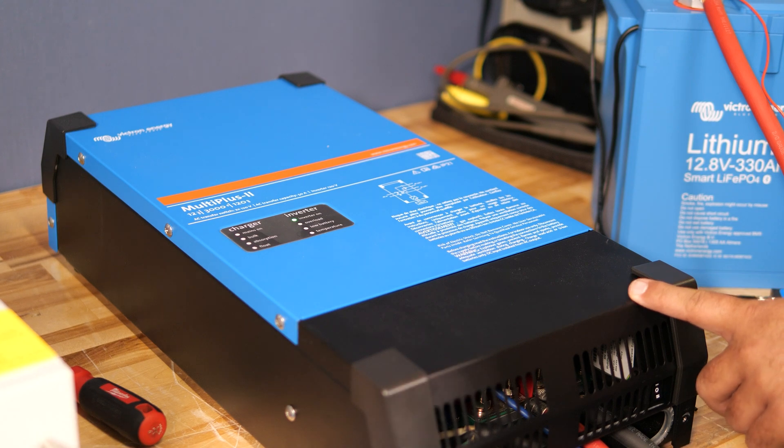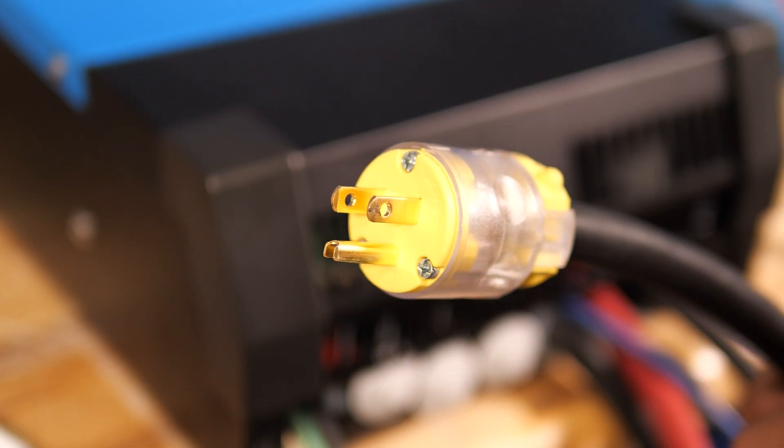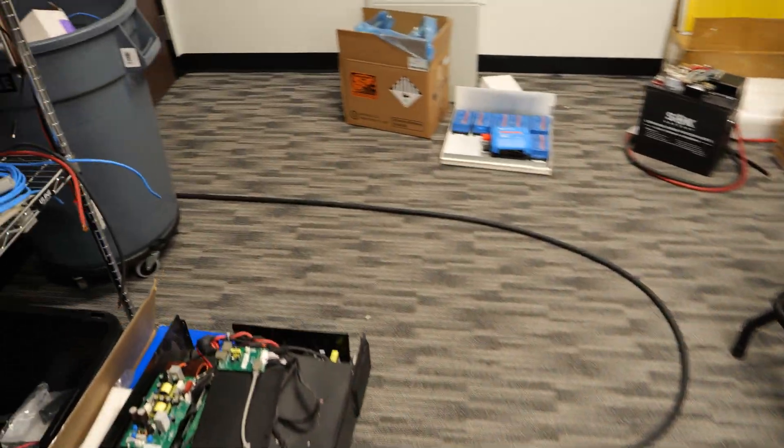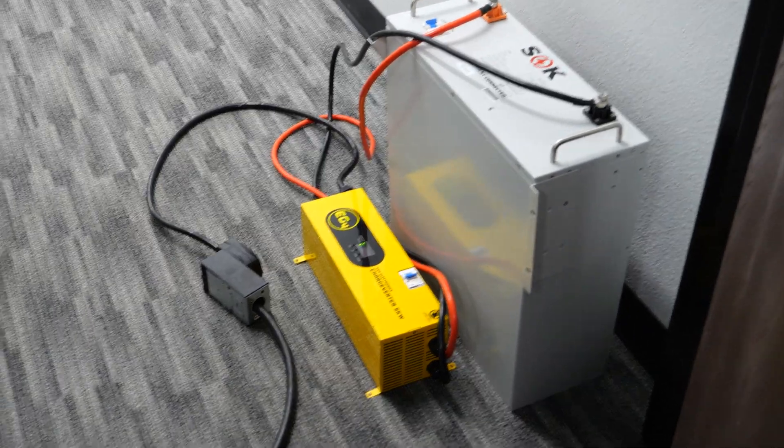Here's the Multi Plus 12 3000. We've got it wired to an AC input. The AC output feeds to our load, which is one of the charge converters, so we can push this unit to the full 2400 watts it can produce.